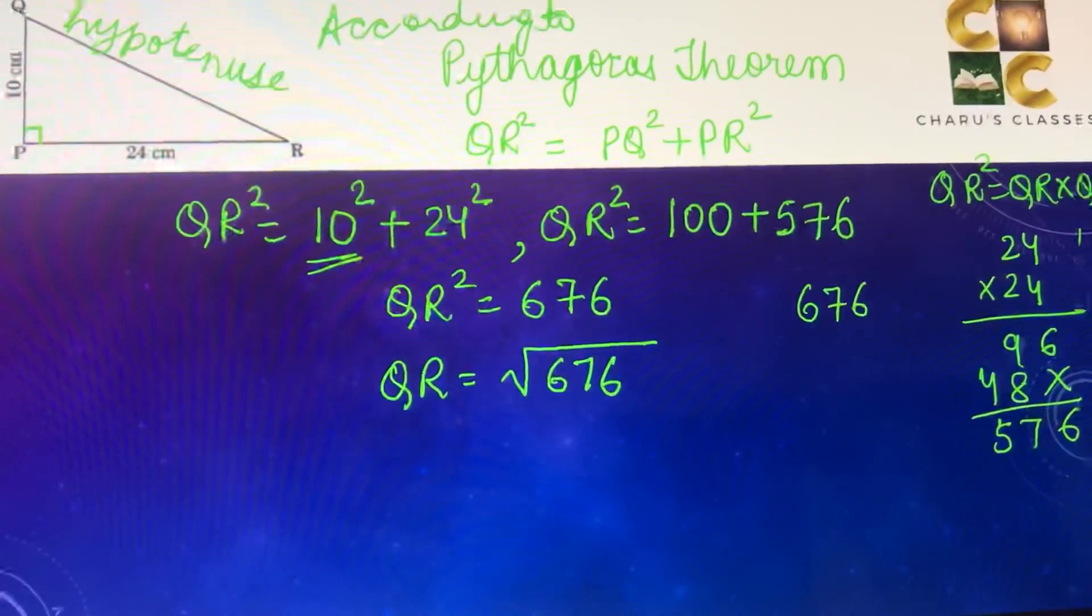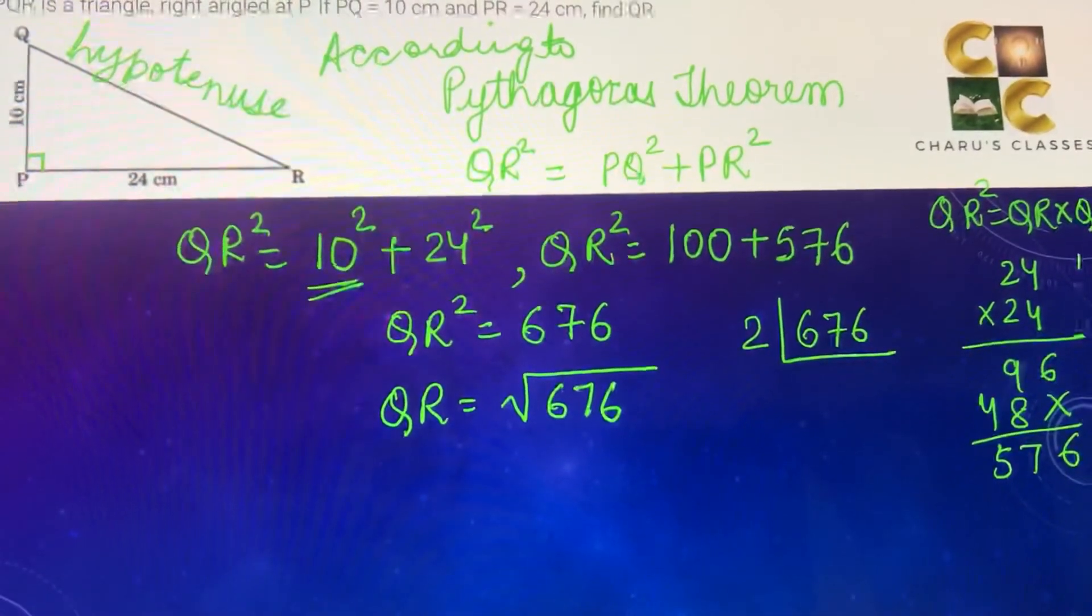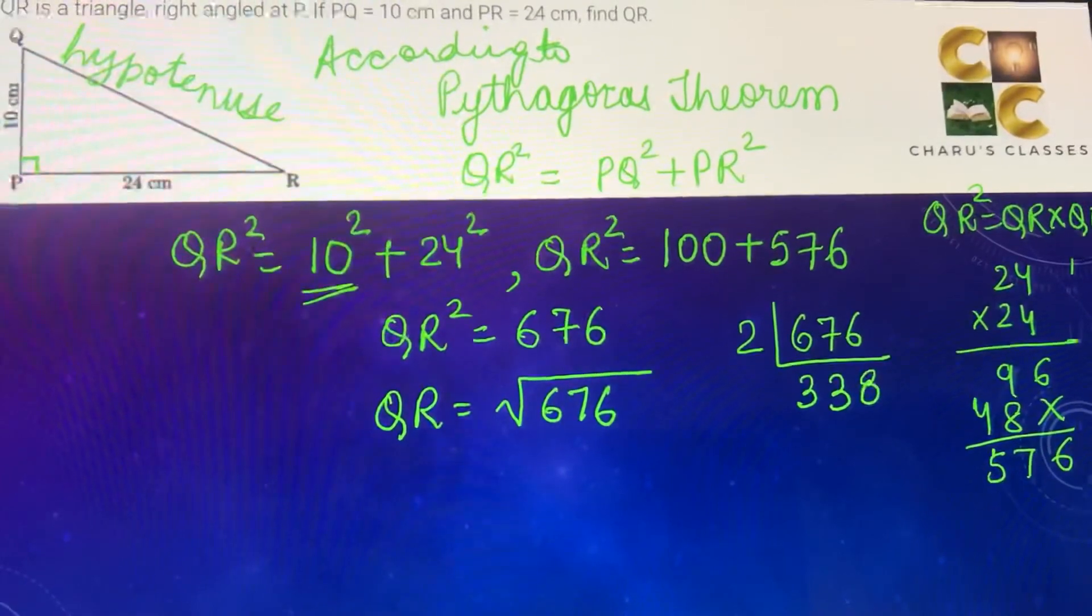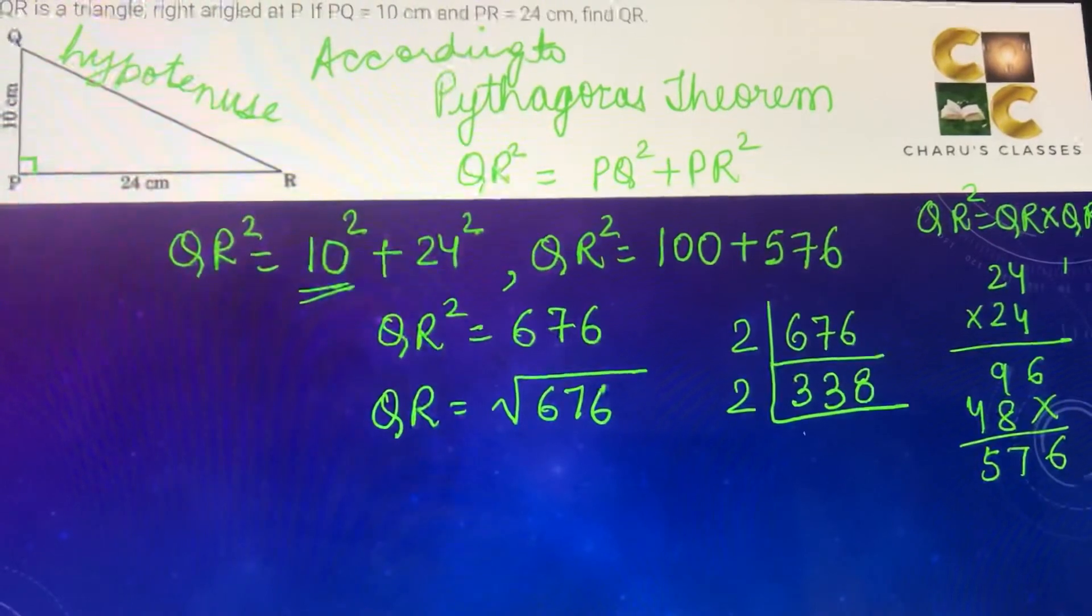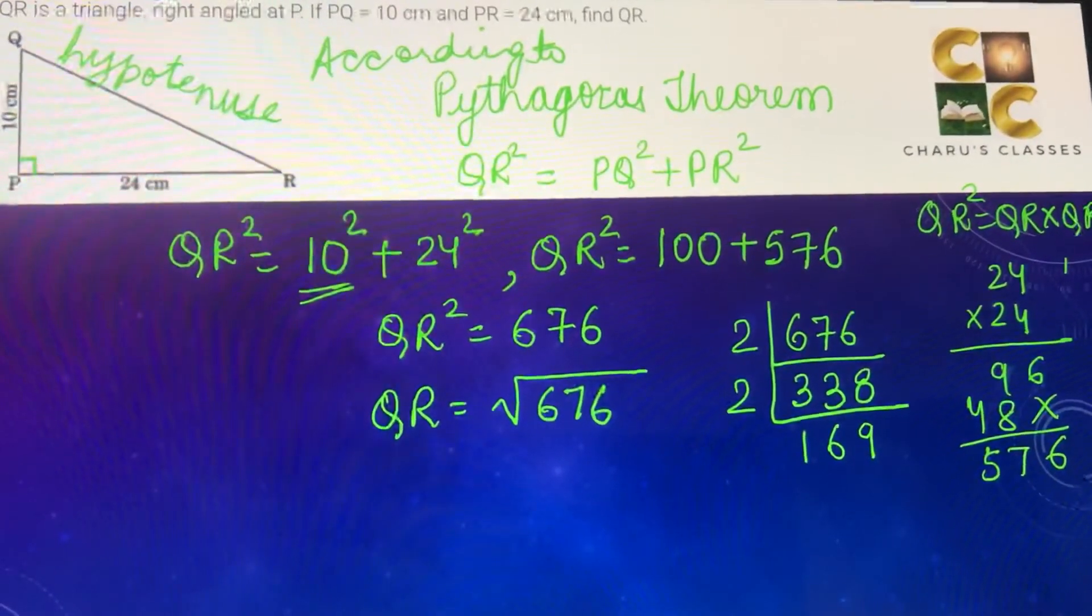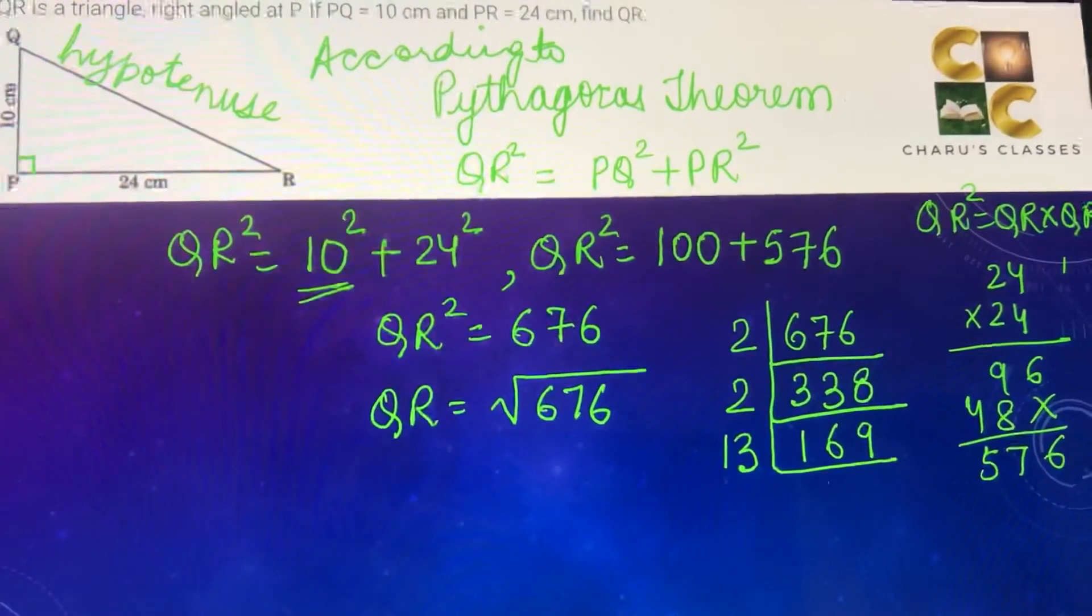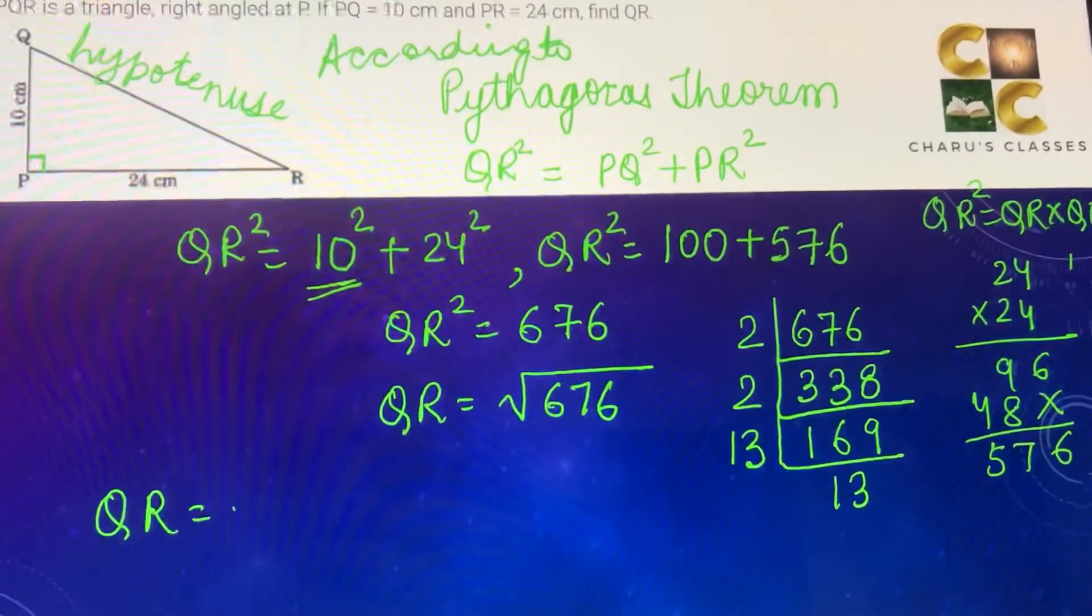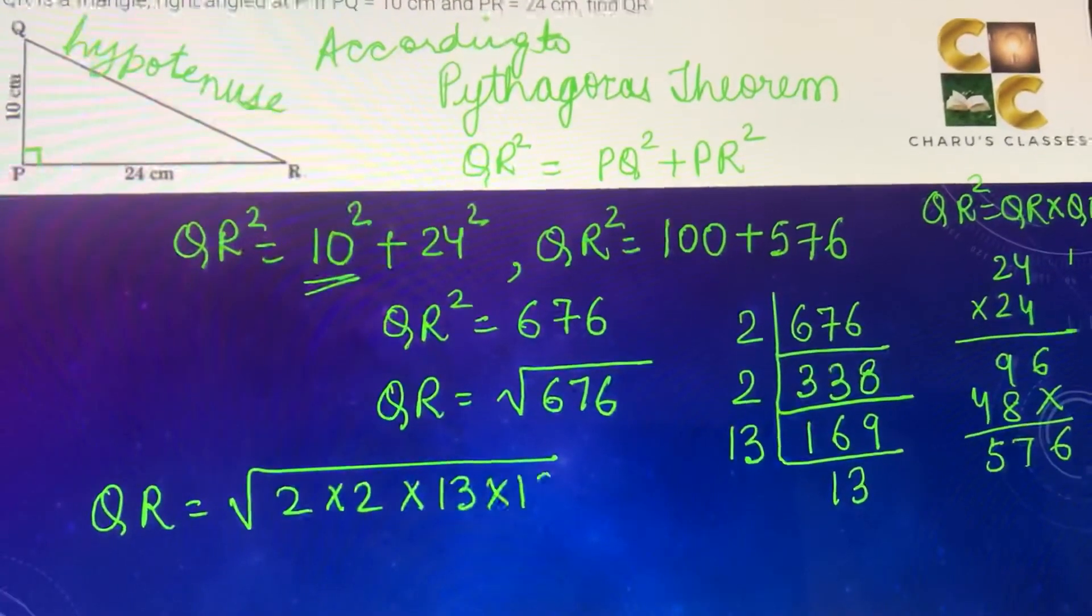So how do we find the square root? We will make prime factors. It goes with 2 because it's an even number, so 338. Again it's an even number so we will again divide it by 2. 169 is 13 into 13. So we can write QR is equal to square root of 2 into 2 into 13 into 13.